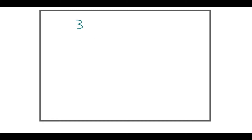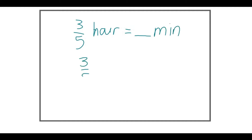A more complicated example: what is 3 fifths of an hour if we convert that to minutes? We know our rule — we're going to say 3 fifths of an hour, which is 3 fifths times 60, and that gives you 36 minutes. So that's your answer.